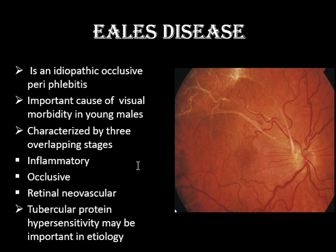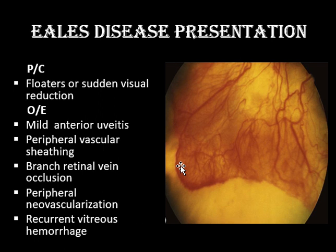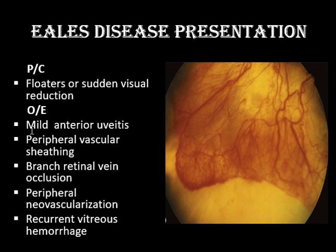The presenting complaints: usually young patients come to the OPD or ER with floaters and sudden visual loss, because of vitreous hemorrhage. On examination, you may see mild anterior uveitis — some cells, which are basically red blood cells. On fundus examination, if this is the inflammatory stage, you see perivascular sheathing.